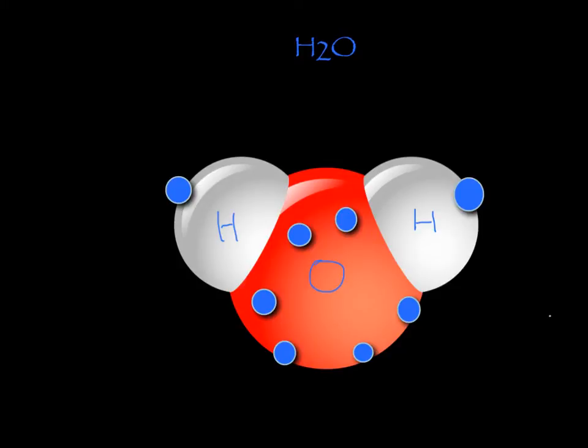Now atoms are made out of protons and electrons. Protons are positively charged, and electrons are negatively charged. These blue dots here are the electrons. Hydrogen has one electron each, and the oxygen atom has six electrons. Now notice how the oxygen atom is actually bigger than the two hydrogen atoms. This means that the oxygen atom has more protons, which are positively charged, and has a stronger positive charge than the hydrogen atoms.